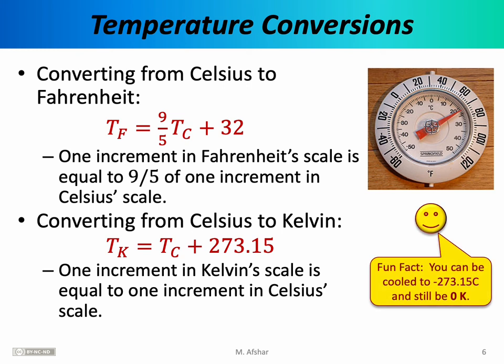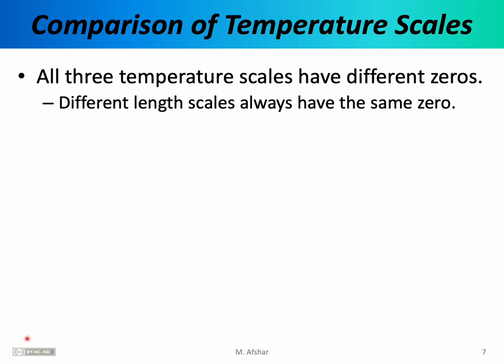Here's a fun fact: you cannot be cooled to minus 273.15 Celsius — that is absolute zero. Note that converting temperatures is a little different than converting other units of measurement, primarily because the three temperature scales all have different zeros. This differs from, for example, length scales or mass scales, which always share the same zero — zero inches equals zero centimeters equals zero miles, and similarly zero grams equals zero kilograms.